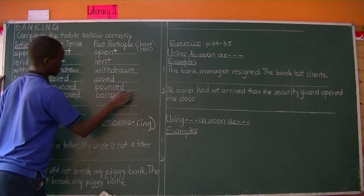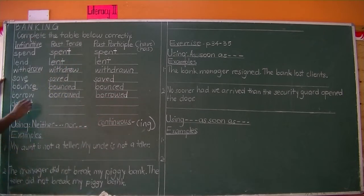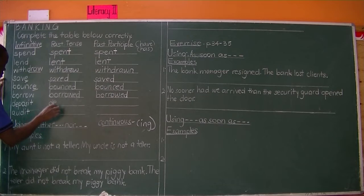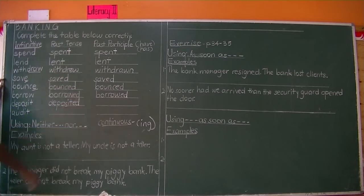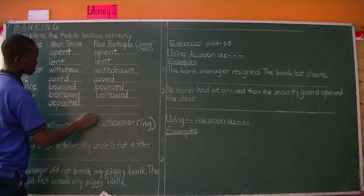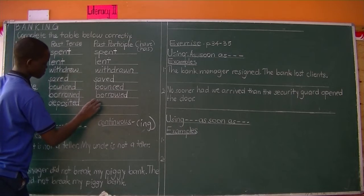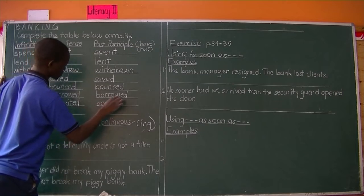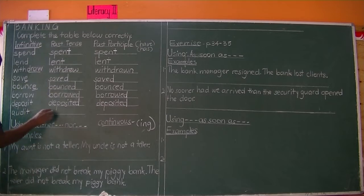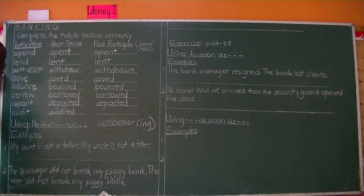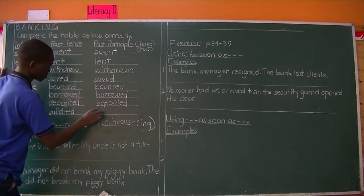Irregular verbs have past tense and past participle forms that are formed differently — not with ED or D. 'Borrowed' stays 'borrowed': 'I borrowed a lot of money from that bank.' Next, 'deposit' is another regular verb. The past tense is 'deposited': 'I deposited a check last year.' The past participle is also 'deposited': 'I have deposited.' Still the same word, because it is a regular verb.